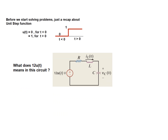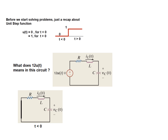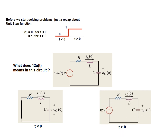Let's see the implication from a circuit. This is the circuit. The input voltage is written as 12u(t). This means that for T less than 0, this will be 12 multiplied by 0, so the voltage source becomes 0. For T greater than 0, it will be 12 multiplied by 1, so it will simply be 12 volts for T greater than 0. We have to keep this concept in mind when solving the problem.